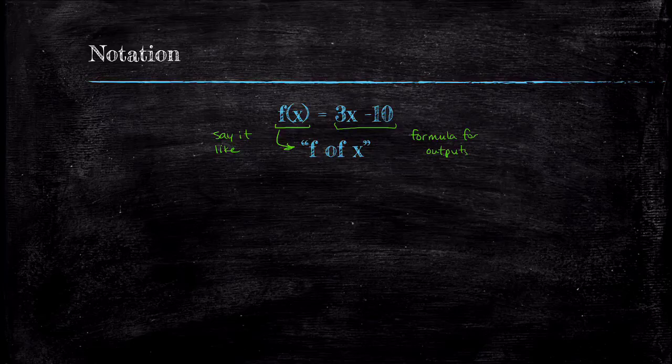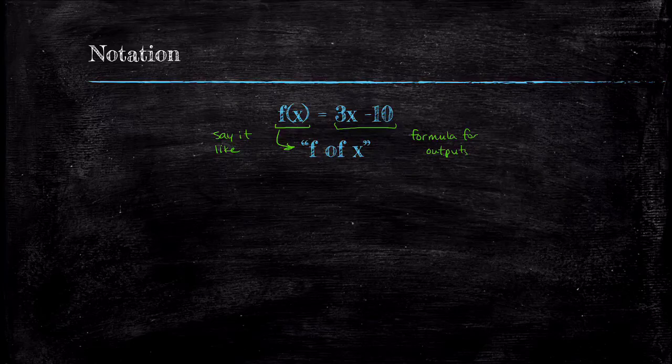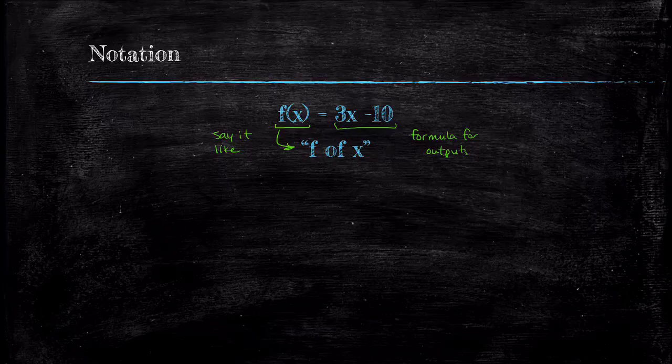The portion to the right of the equal sign is the formula for the outputs. From algebra, you might remember plugging in an x value to find the output. The x is serving as a placeholder for any input you want. If you wanted to use another placeholder like c, you would call your function f(c) = 3c - 10. We would both be talking about the same function with the same graph and input-output values. It's just a style choice.